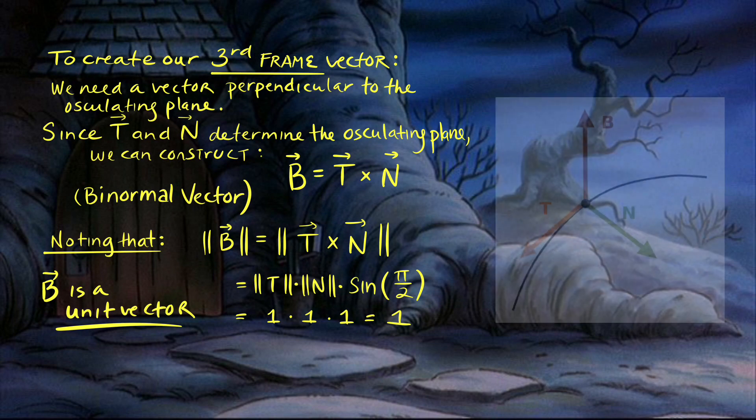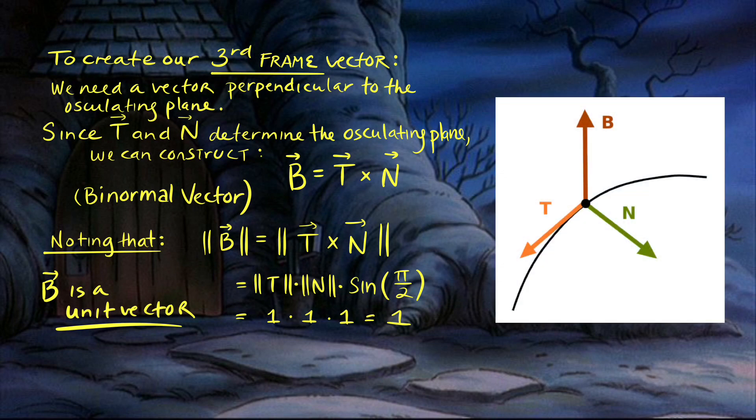To create the third vector in the frame we need the binormal vector B. From calculus — Calc 3 — we get this vector perpendicular to the osculating plane by taking the cross product of T and N, and we can show this works out to be a unit vector when using the unit tangent vector T and the unit normal vector N.